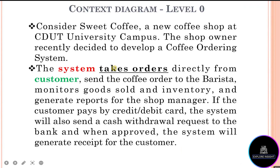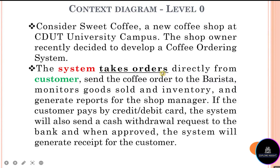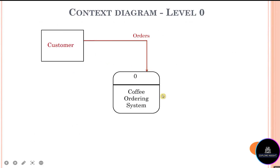We start with the system: it takes orders directly from the customer. The system will use the process DFD component, whereas the customer will use the external entity component. The relationship between the system and the customer — it takes orders — but remember from my first video, the data flow label must be a noun. So we remove the verb 'takes' and keep 'orders.' We have the process component named coffee ordering system, the external entity named customer, and the data flow named orders.